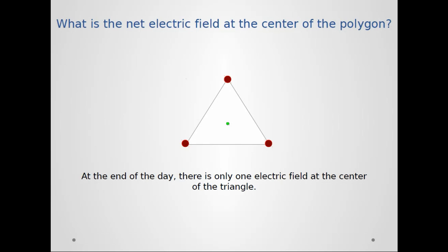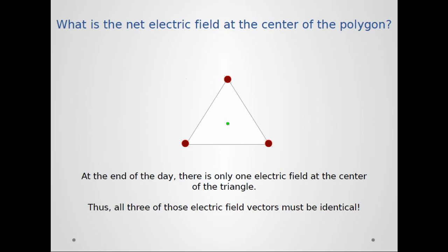Now, at the end of the day, there's only one electric field at the center of the triangle. But as we've seen, all three of those vectors are the same. They all must be identical because they're all describing the same charge configuration. And so the only way that's possible is if all of them have a magnitude of zero. So the electric field at the center of the polygon has a magnitude of zero.